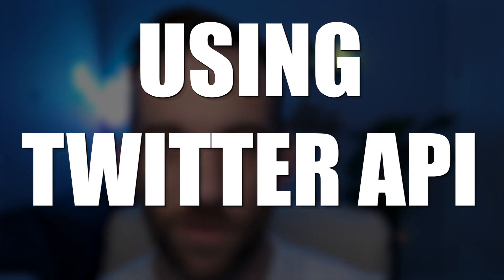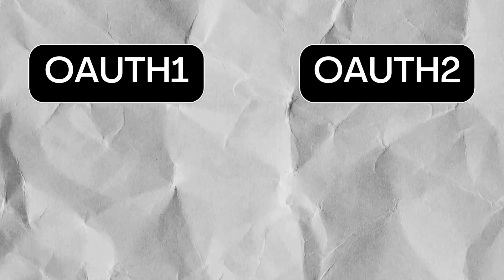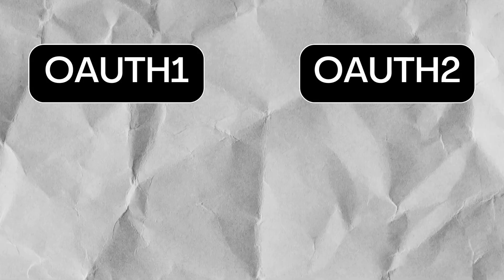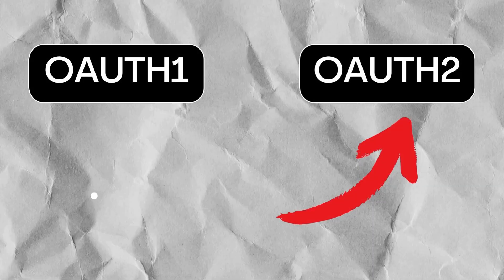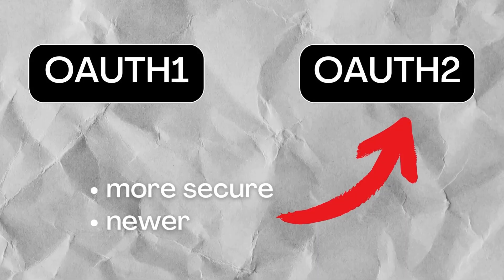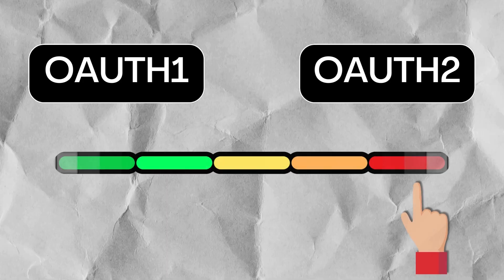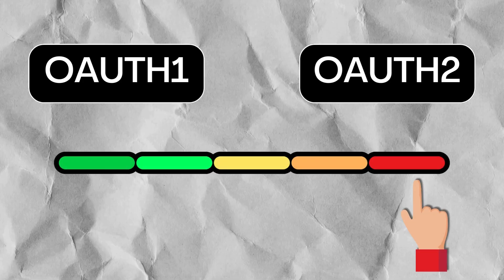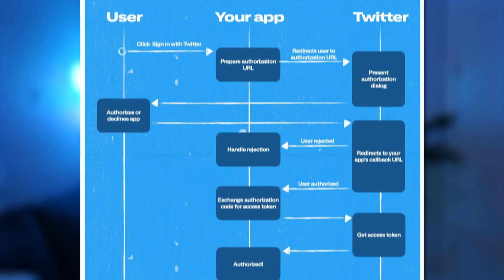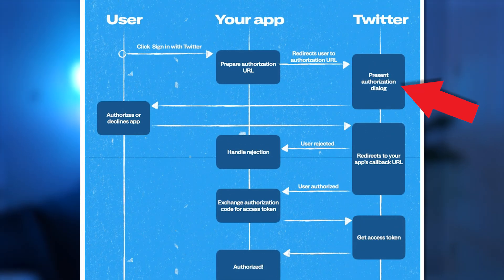The first thing I had to figure out was using Twitter or X's API. I quickly found out that there is an OAuth 1 and OAuth 2. OAuth 2 is better and more secure, but it is a little harder since you need to have a website essentially to authenticate a callback and redirect URL.